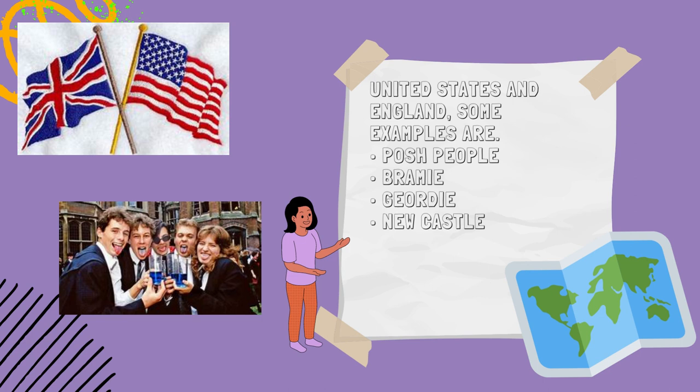Internationally, there are also variants of different languages, especially if we focus on countries where English is spoken such as the United States and England. Some examples are Polish, Remy, Geordie, Newcastle, Yorkshire and South.